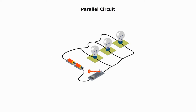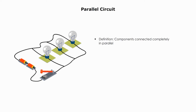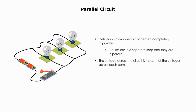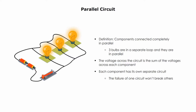In contrast, a parallel circuit includes components connected completely in parallel. For example, three bulbs are in separate loops and they are in parallel. The voltage across the circuit is the sum of the voltages across each component. Each component has its own circuit, which means the failure of one circuit won't break others.